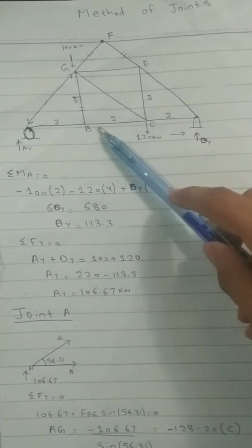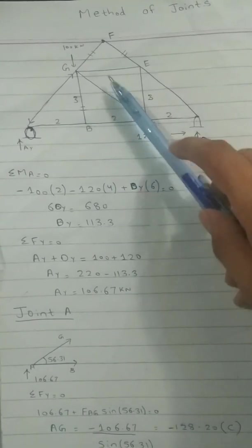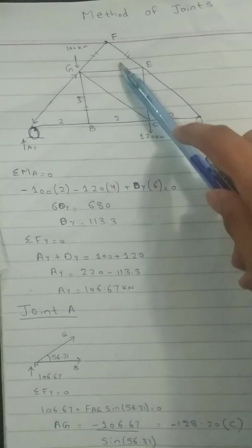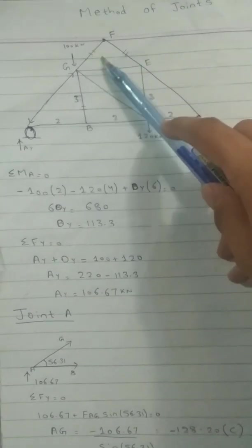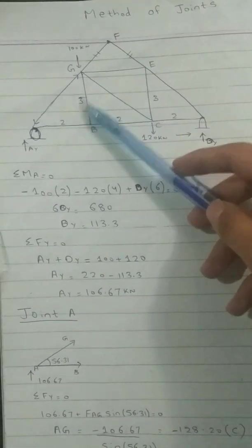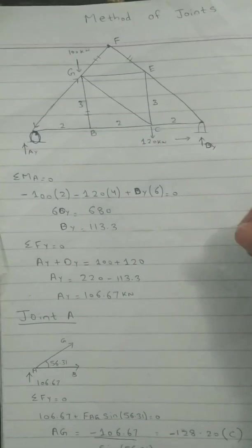But you can see that when you stand at this joint, these two members are collinear and it will be a zero force member. So basically one, two, three, we will not be using our working for these members because we already know these are zero force members.